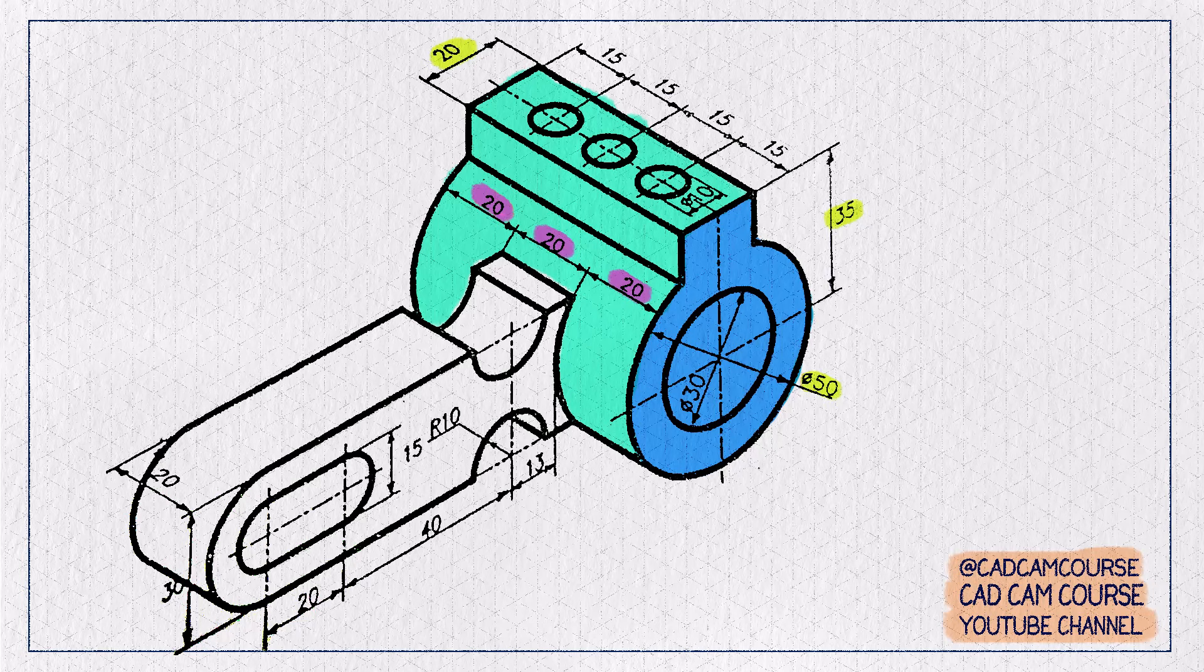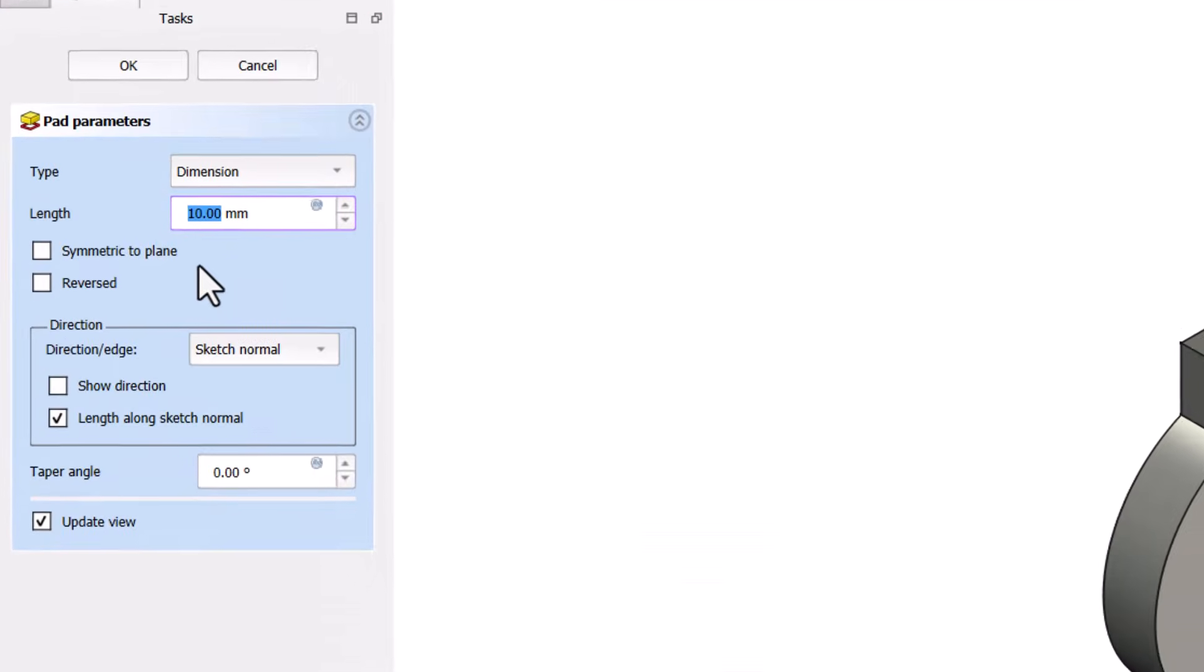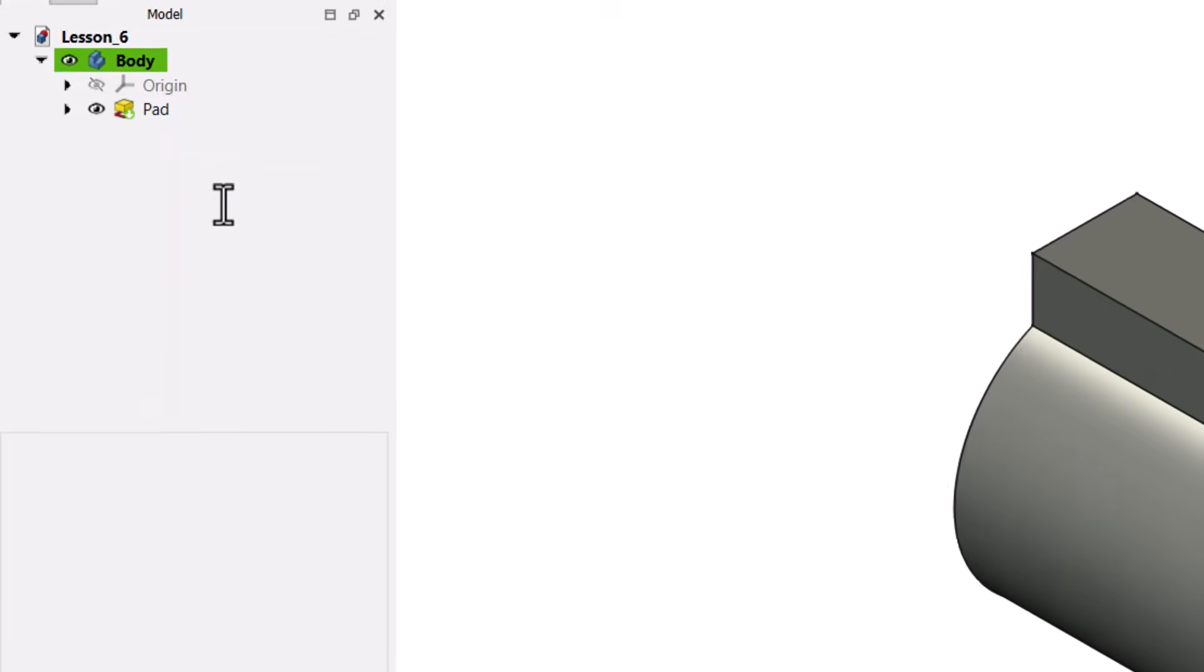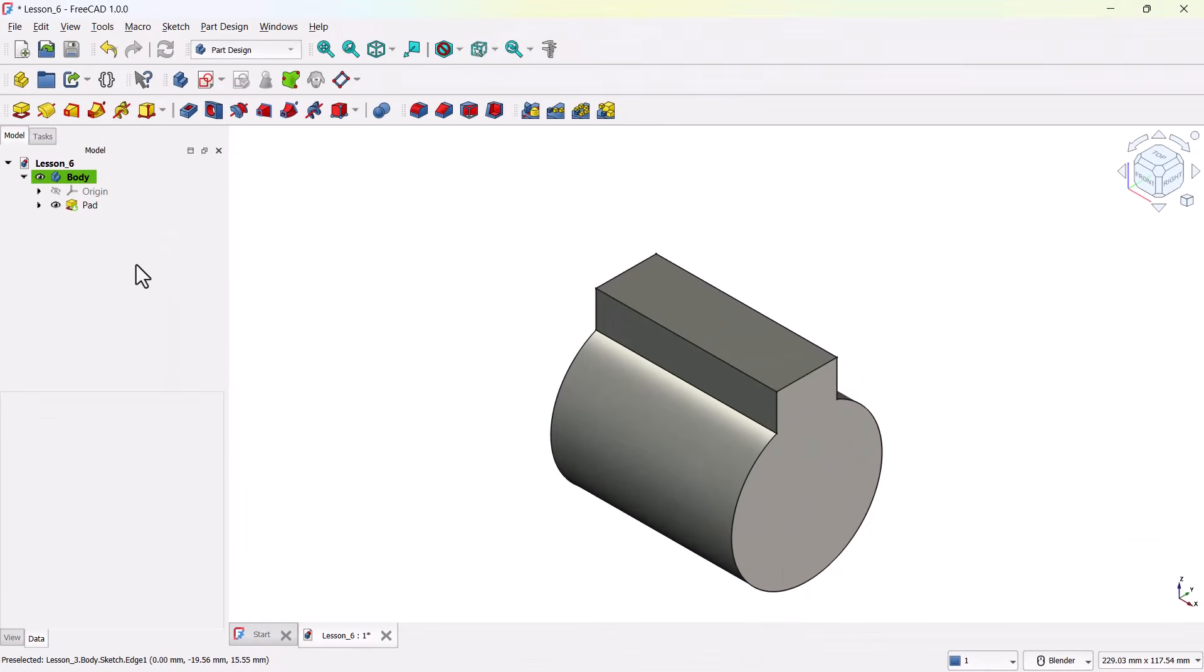So here in the Pad parameters, check this box, Symmetric to Plane, and enter the extrusion length as 60 millimeters. The sketch is now extruded into cylinder, so step number two is also completed.